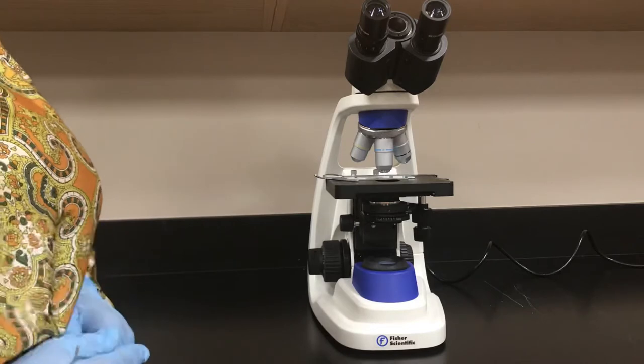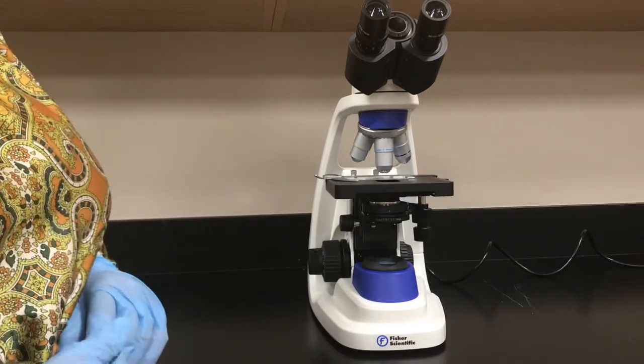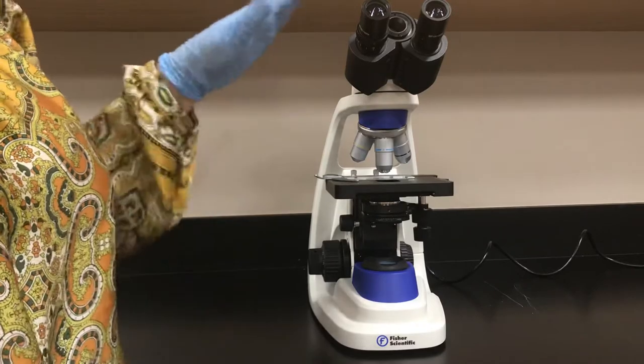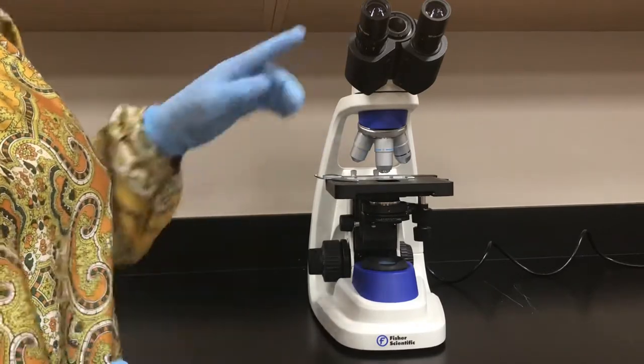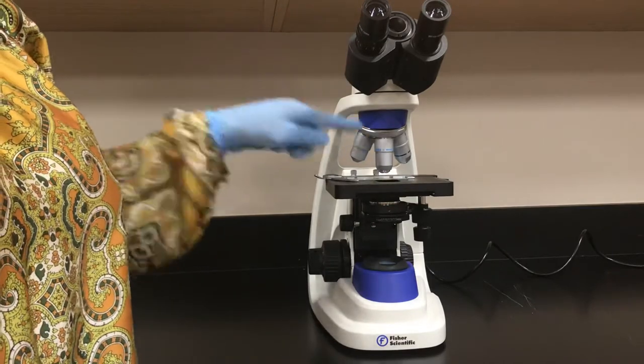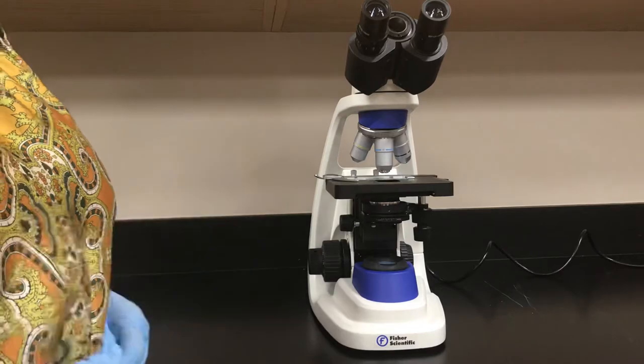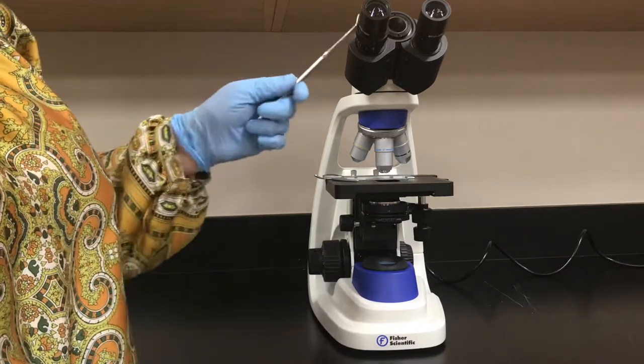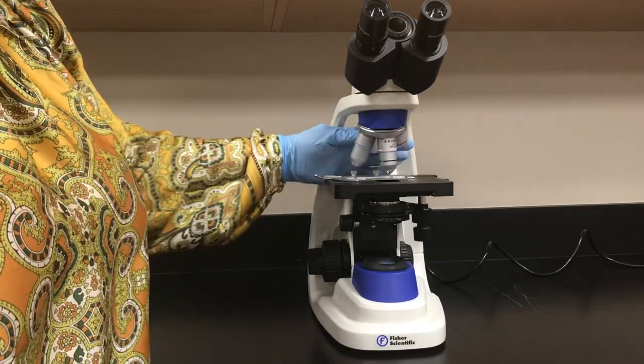When you try to calculate total magnification power, you should always multiply the ocular power with the objective power. If you're looking through your ocular and using the blue color coded high power objective, your total magnification power should be 10 times 40, equal to 400.